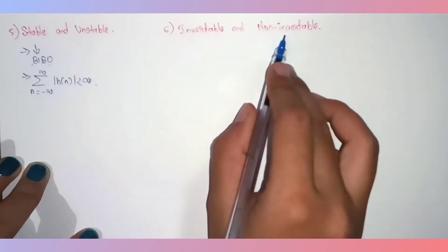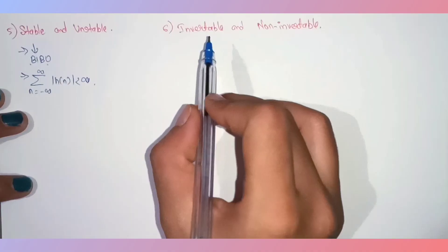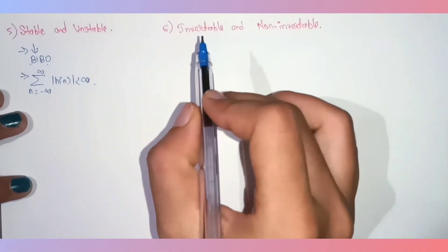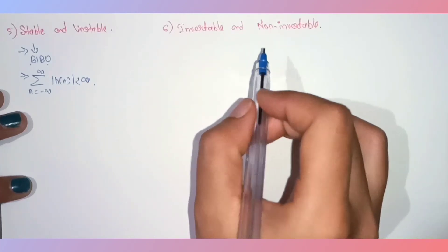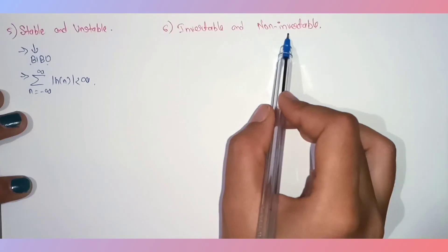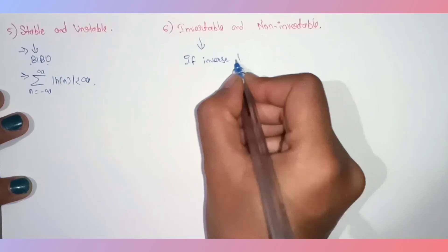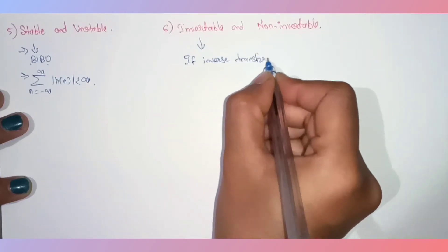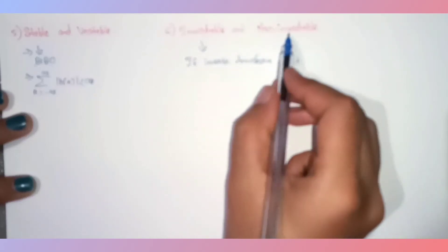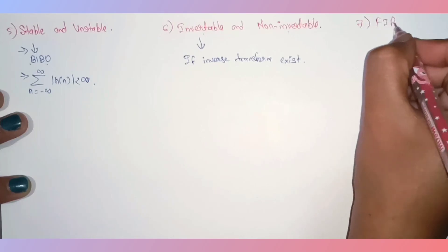A system is said to be invertible if there exists an inverse transform of the system. If no possible inverse transformation exists, the system is non-invertible. In short: if the inverse transform exists, the system is invertible; otherwise it is non-invertible.